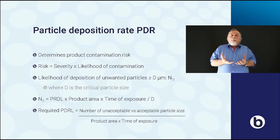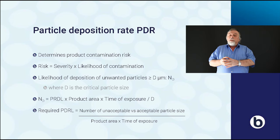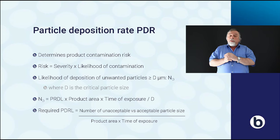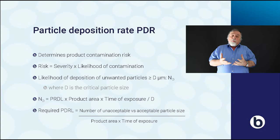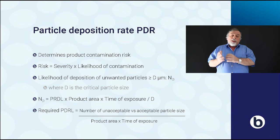Products can be contaminated by particles through deposition, so the particle deposition rate determines the risk of product contamination. Risk is severity times the likelihood of contamination. Severity means the consequences of contamination — it could be high if particles are large and lower when particles are small. The likelihood of particles depositing onto a product is related to the product area and the time the product is exposed. The number of particles larger than d equals the particle deposition rate level times the product area times the time of exposure during operation, divided by the critical particle size d.